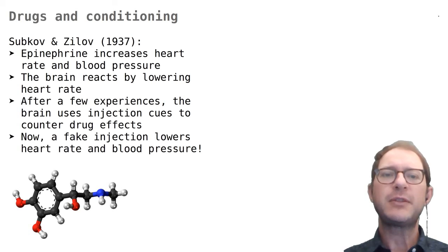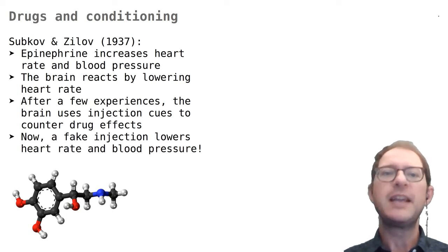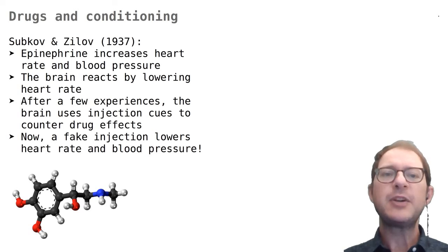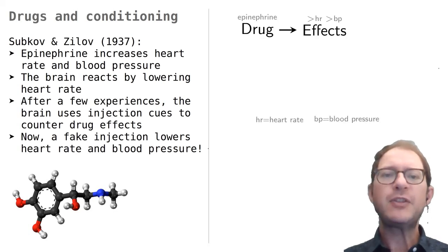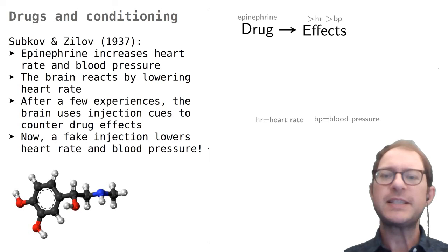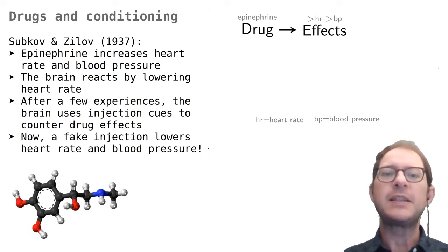Already Pavlov knew that conditioning can take place in the context of drug taking. Let's look at an early experiment by two of Pavlov's colleagues, Russian psychologists Subkov and Zilov. In these experiments, dogs were injected with epinephrine, also known as adrenaline — the molecular structure is shown on the left. An injection of epinephrine given to a healthy animal increases heart rate and blood pressure beyond what the animal needs at the moment.